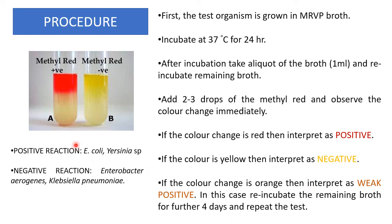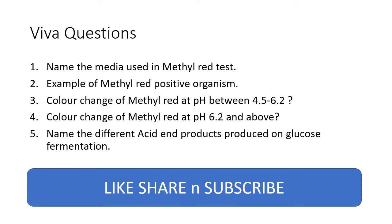If the color changes to red, interpret as positive; yellow is negative; orange is weak positive, requiring further four-day incubation before repeating. For examples: E. coli and Yersinia species show a positive reaction; Enterobacter aerogenes and Klebsiella pneumoniae give a negative reaction. The control tube should show yellow and the test tube should show red (positive).